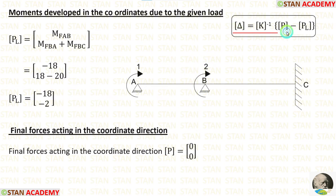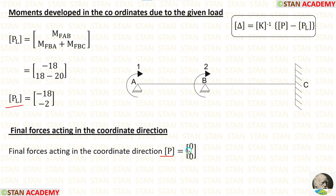Now let us make the P matrix. Like the PL matrix, the P matrix also has two values, but both values are zero because there is no overhang in the given beam.